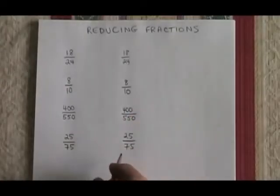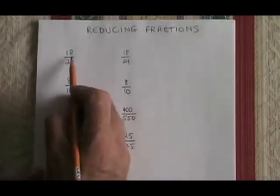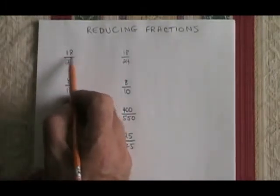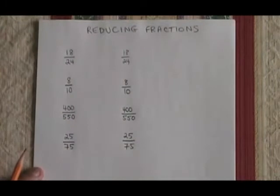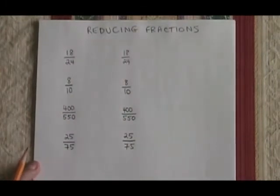To reduce fractions, we look for a common factor between the numerator and the denominator, and we divide both top and bottom by that common factor. We would like to use the greatest common factor.